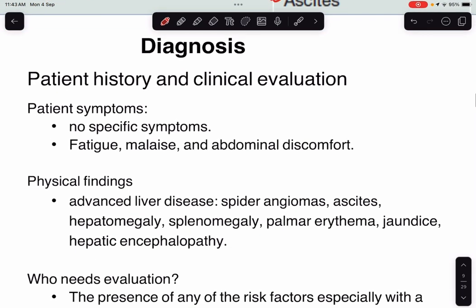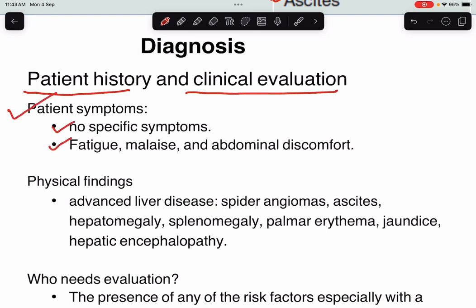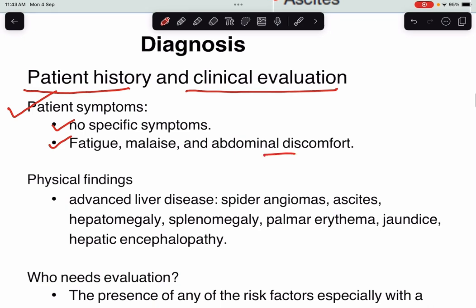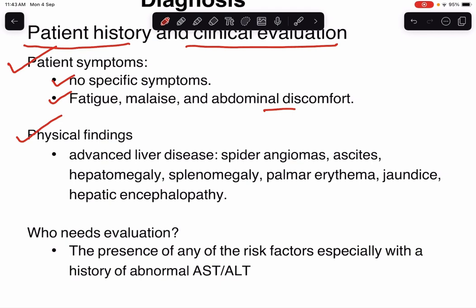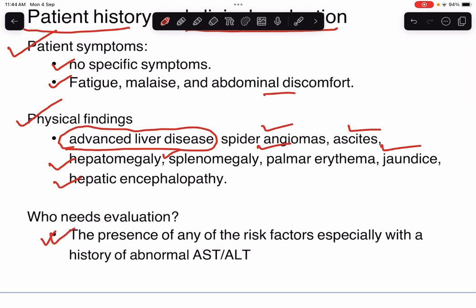How do we diagnose a case of NAFLD? We need to take into consideration patient history, clinical evaluation, and investigations. There will be no specific symptoms — vague symptoms like fatigue, malaise, and abdominal discomfort in the right upper abdomen. On physical examination, early NAFLD may show only mild hepatomegaly, but advanced stages present with stigmata of liver cell failure: spider angioma, ascites, hepatomegaly, splenomegaly, pulmonary edema, jaundice, and hepatic encephalopathy. Patients with risk factors, especially with abnormal AST and ALT, need to be evaluated for NAFLD.